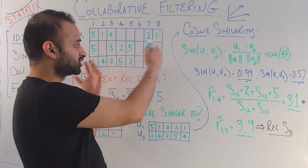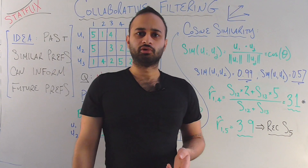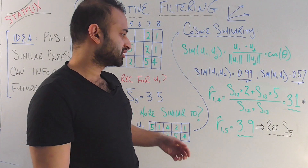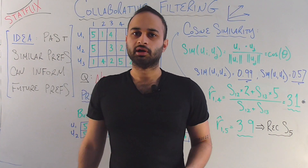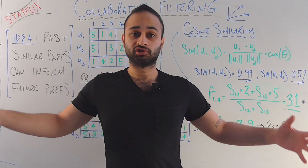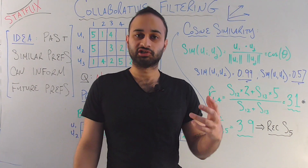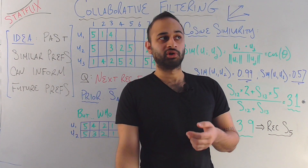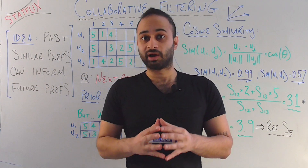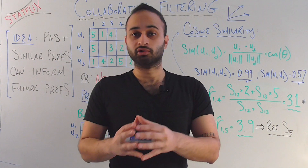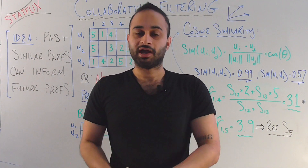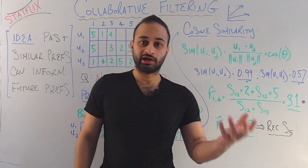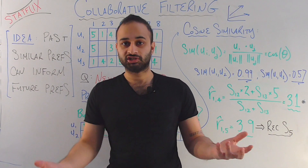The second barrier is scalability. In our example we computed cosine similarities and weighted averages across just three users and eight shows. With many more users and content, these computations can slow down considerably. When you actually write the code for collaborative filtering, you need to think about how to do this efficiently so it doesn't slow down your system.